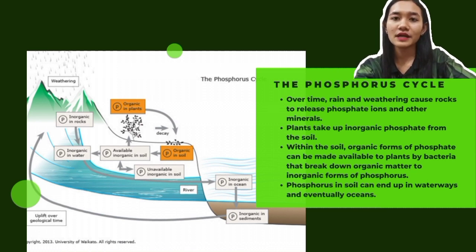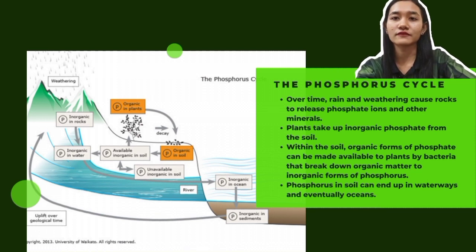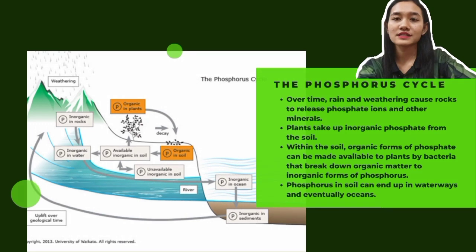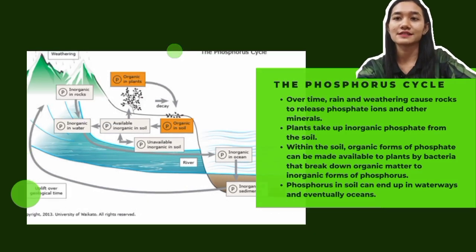Next, plants take up phosphorus from the soil, and the organic forms of phosphate are made available to plants by bacteria that break down organic matter into inorganic forms of phosphorus. After that, the phosphorus in the soil ends up in waterways and eventually oceans.